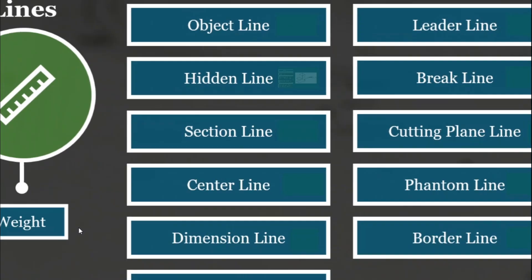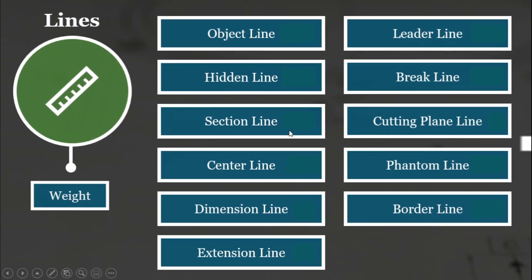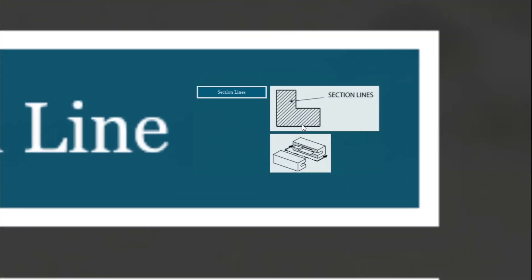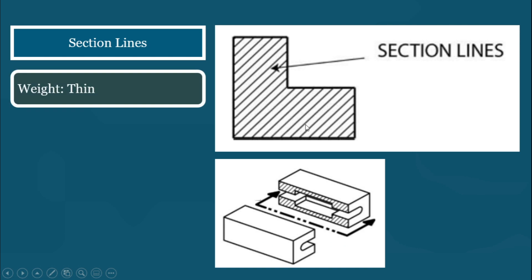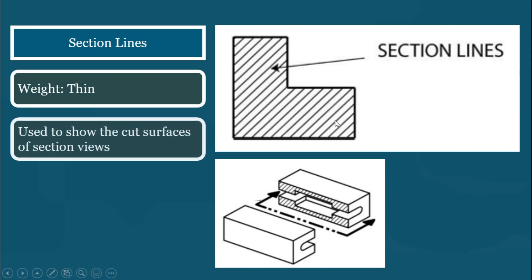Next, we have section lines, which are also thin lines, the same as hidden lines. These lines are thin lines used in section views of a drawing.